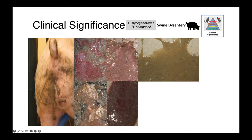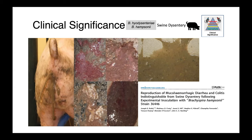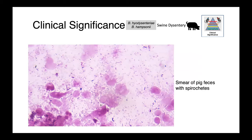These images were all collected during a trial where we attempted to fulfill Koch's postulates with novel strains of Brachyspira — specifically Brachyspira hampsoni. In this image, you can see a gram-stained smear of pig feces with spirochetes visible. They're certainly visible on gram-stain, but stand out better on wet mount where we can actually see their motility.